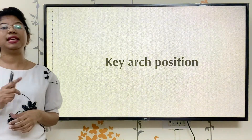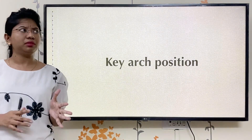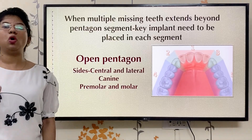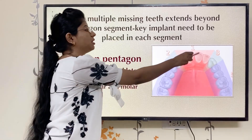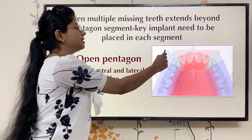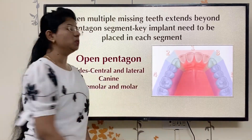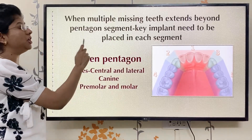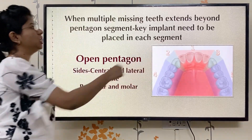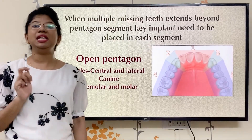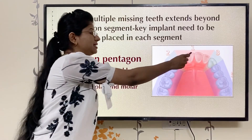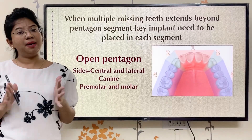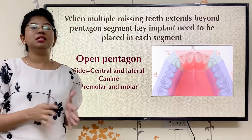The last rule is key arch position. Key arch position says you have to consider your whole arch as an open pentagon. In that open pentagon, the first segment is of central and lateral incisors, the third segment is of the canine, and the fourth segment includes the premolars as well as the molars. The rule says that when multiple missing teeth exceed beyond the pentagon segment, you need to place key implants in each segment. If it exceeds, you require key implants in each segment.